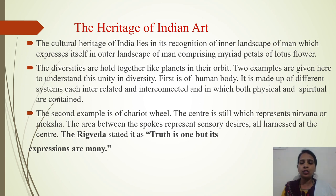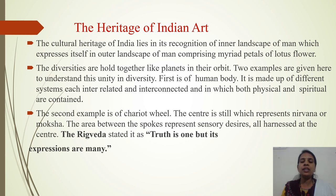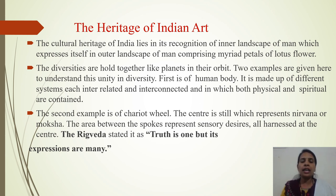The second example is of the chariot wheel. Rath ke pahiye ka kendra hamesha sthir hai. Pahiye ki paridhi ghumti hai, lekin uska kendra ek hi jagah par sthir hota hai — toh woh nirvana ya moksha ka pratik hai. The area between the spokes represents sensory desires — hemari indriyon ko ya hemari icchhao ko pradarshit karte hain — lekin sabhi icchhahen harnessed, matlab controlled, kendra mein. The Rigveda stated it as: truth is one but its expressions are many. Sathya ek hai, lekin uski abhivyakti kai rupon mein hai.